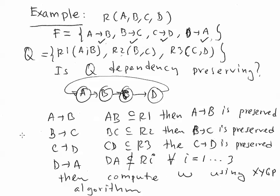The first three dependencies — A derives B, B derives C, and C derives D — we can see directly that they are preserved. Preserved means they can still be enforced by one of the tables. A→B is a subset of R1 since R1 has A and B, so it is preserved; similarly for B→C and C→D. However, for D→A, we don't know yet.